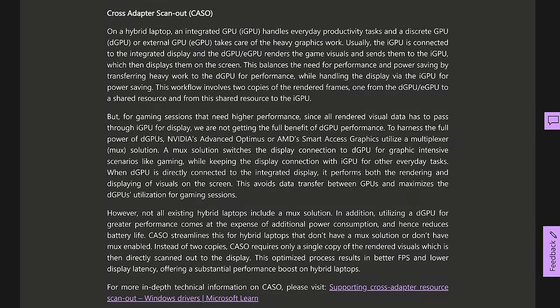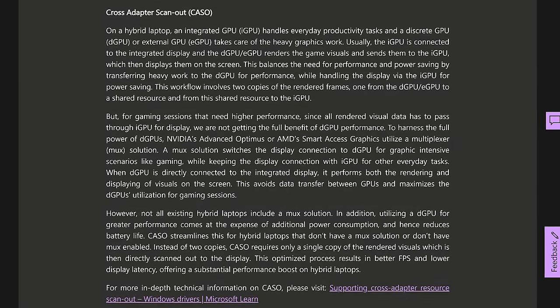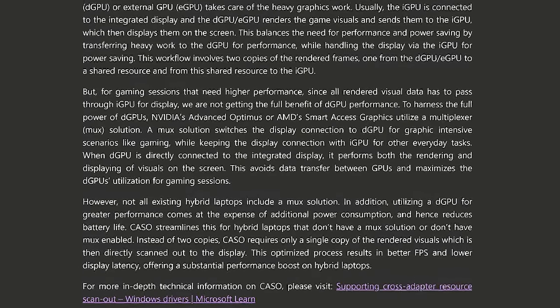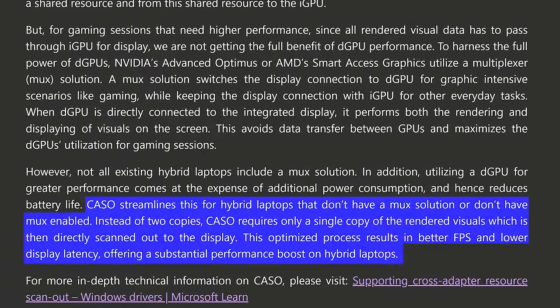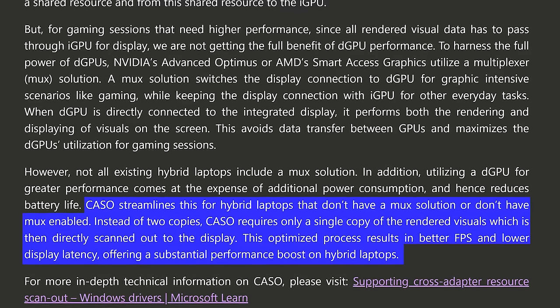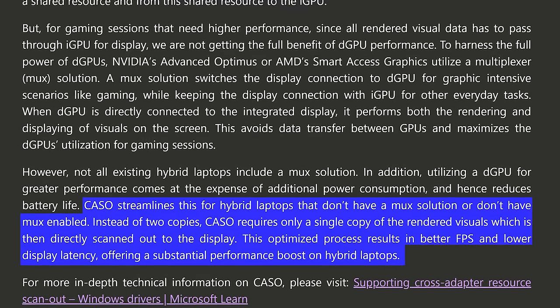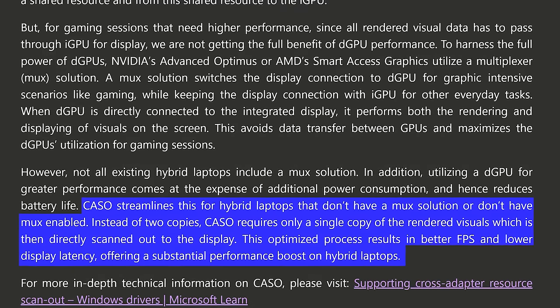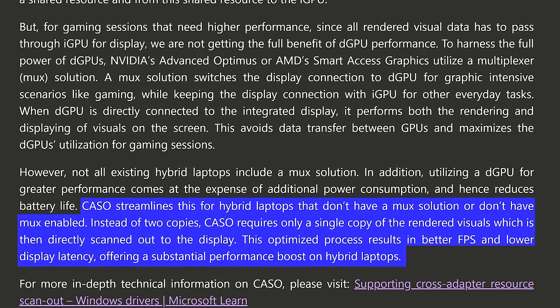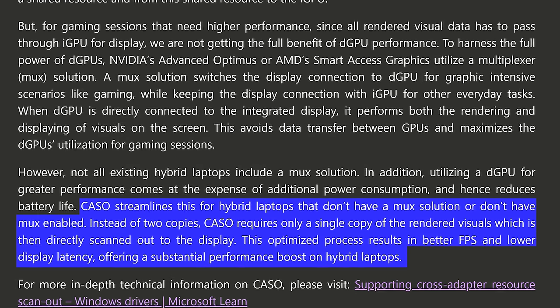This blog post from Microsoft outlines how KSO works — I'll leave a link to it below. Basically, instead of two copies of the rendered frames going from the discrete graphics to a shared resource to the iGPU, KSO only requires one copy of the rendered visuals, which is then scanned out to the display. So with Optimus on, only one copy of the frames is needed now instead of two, meaning less bottleneck due to a more efficient process.